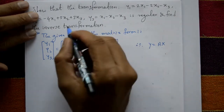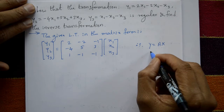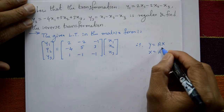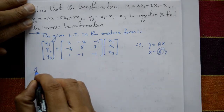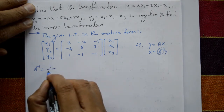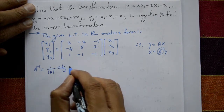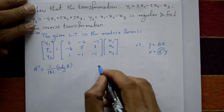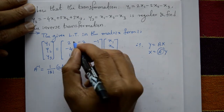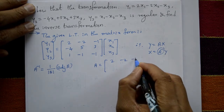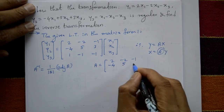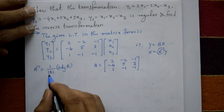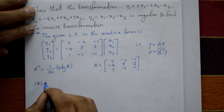Now for the inverse transform: X = A⁻¹·Y. To find the inverse of A, we use A⁻¹ = (1/det(A)) · adj(A). The matrix A is: first row [2, -2, -1], second row [-4, 5, 3], third row [1, -1, -1]. Now first find the determinant of A.